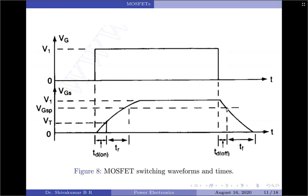After the turn-off delay, the gate to source voltage starts to fall. The fall time is the time required for the input capacitance to discharge from the pinch-off region at VGSP down to the threshold voltage. The moment the gate to source voltage becomes less than or equal to the threshold voltage VT, the transistor will turn off. That concludes the introduction to power MOSFETs and their switching characteristics.